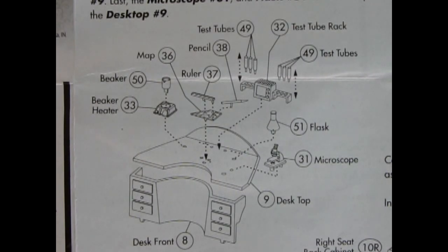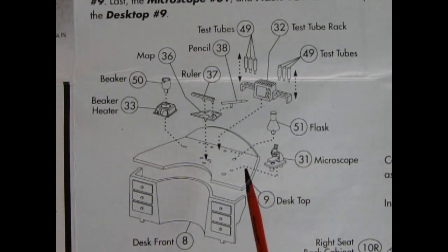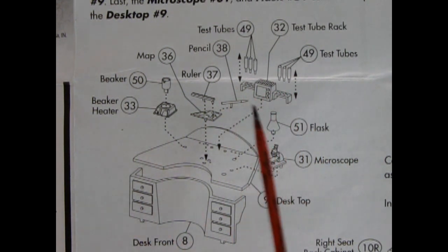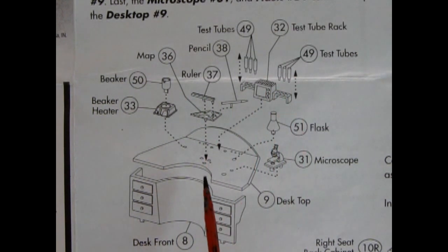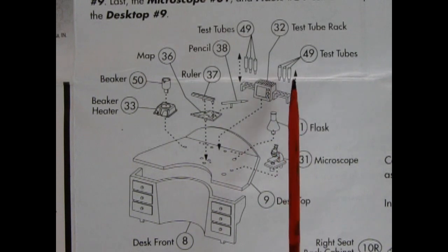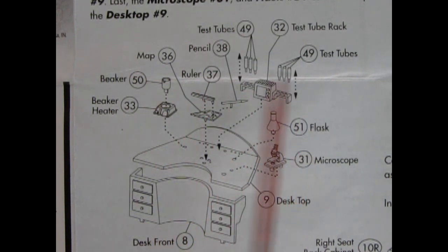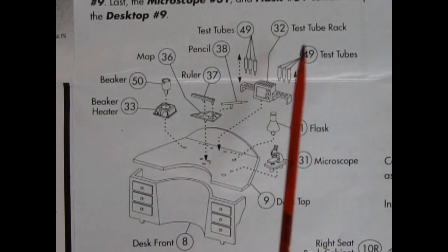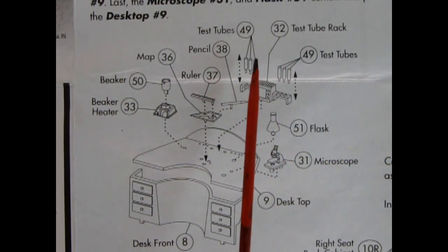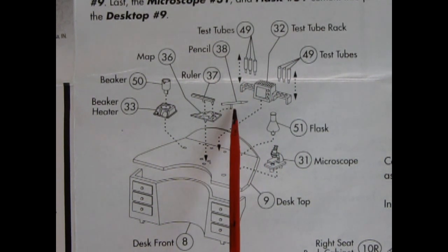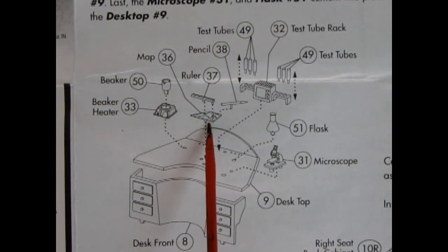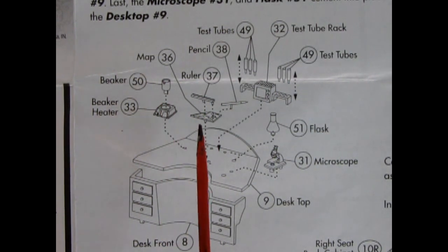Now first off we start on our interior and we start at the back of the car with this really wonderful bat desk back here. Now this is to do chemistry and other cool experiments on as you're trying to fight crime. So this would be like your crime scene laboratory desk. So what do we have here? We've got the desk front with drawers, the desktop, a microscope, a flask, test tubes, test tube rack right here, more test tubes. There's the pencil, there's the ruler and this would be the map down here. Then we have a beaker and a beaker heater.